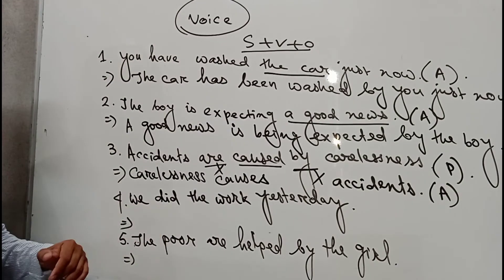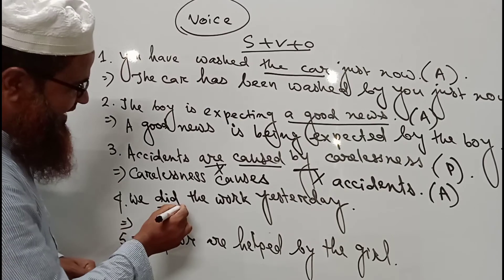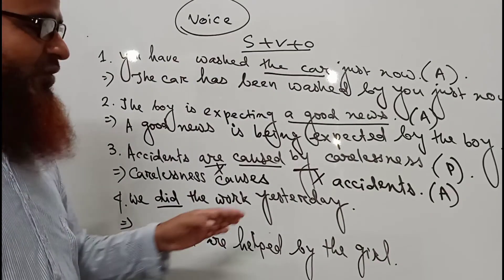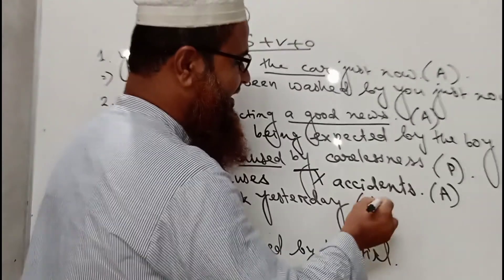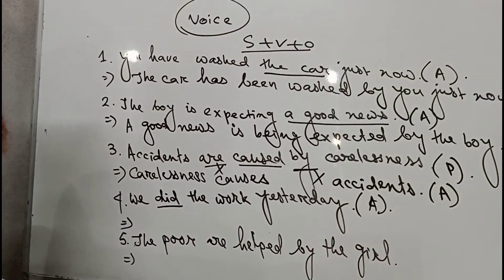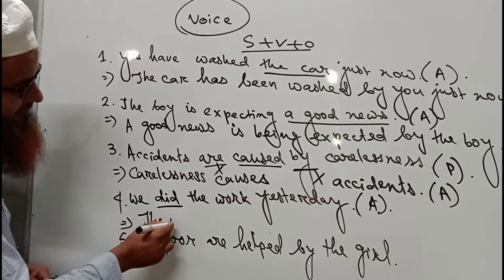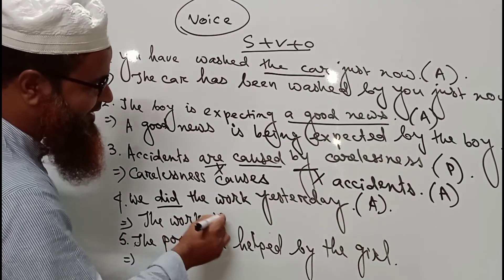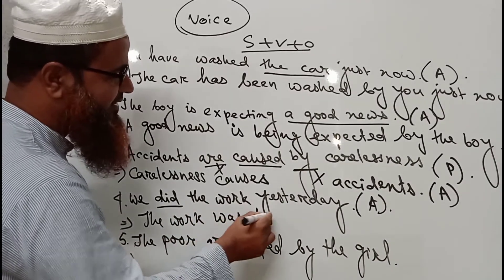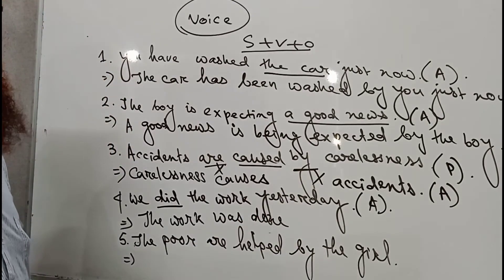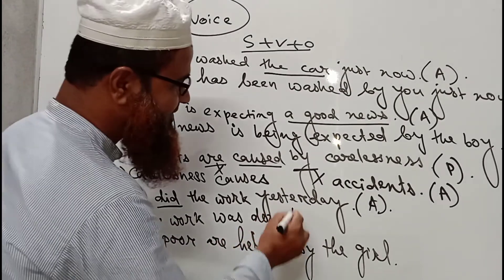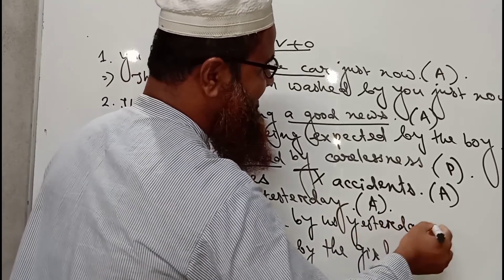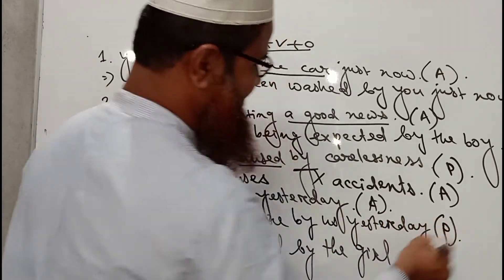Number four: 'We did the work yesterday.' The verb 'did' is the past tense form of 'do', so this is past indefinite tense. The object 'the work' becomes the subject. Since the verb is in past tense, we write 'was'. Using the past participle of 'do', which is 'done': 'The work was done by us yesterday.' This is the passive voice sentence.